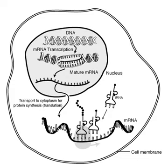In transcription, an mRNA chain is generated, with one strand of the DNA double helix in the genome as a template. This strand is called the template strand. Transcription can be divided into three stages — initiation, elongation, and termination — each regulated by a large number of proteins such as transcription factors and coactivators that ensure that the correct gene is transcribed.